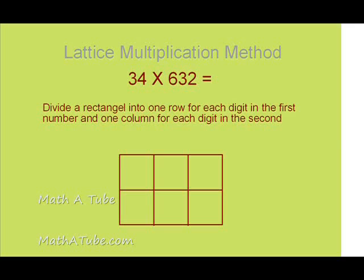So in this example, since 34 has two digits, our rectangle has two rows, and since 632 has three digits, our rectangle has three columns.